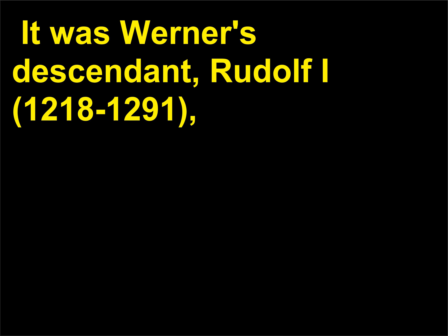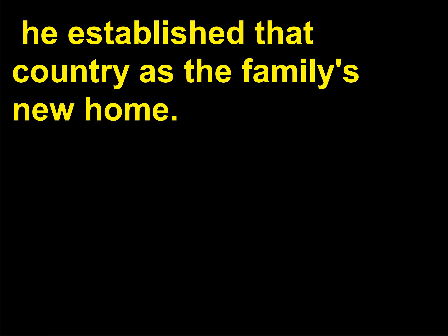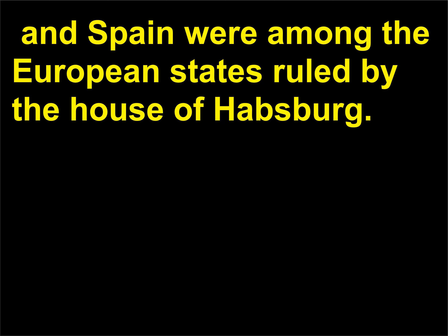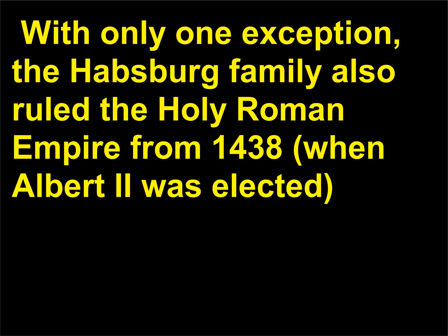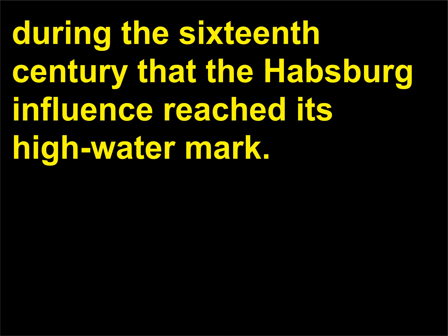It was Werner's descendant Rudolf I who was elected king of Germany and the Holy Roman Empire in 1273. When Rudolf conquered Austria three years later, he established that country as the family's new home. Austria, Bohemia, Germany, Hungary, and Spain were among the European states ruled by the House of Habsburg. With only one exception, the Habsburg family also ruled the Holy Roman Empire from 1438, when Albert II was elected, until 1806. It was during the reign of Emperor Charles V in the 16th century that the Habsburg influence reached its high-water mark.